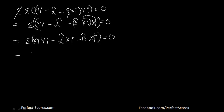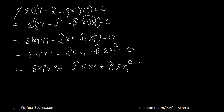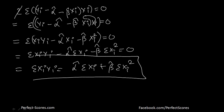Breaking this up further, it becomes: summation of xᵢyᵢ minus α̂ into summation of xᵢ minus β̂ into summation of xᵢ² equals 0. From here, summation of xᵢyᵢ is equal to α̂·summation of xᵢ plus β̂·summation of xᵢ². This is what we call the second equation, which helps calculate the values of β̂ and α̂ in terms of xᵢ and yᵢ.